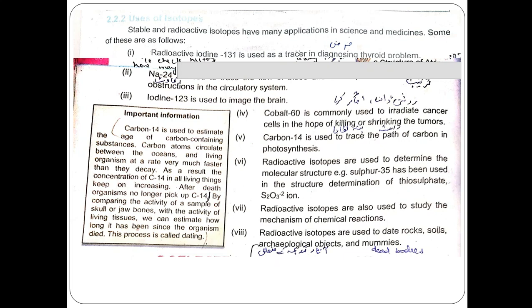Iodine-123 is used to image the brain — similar to how CT scans use iodine-123 for brain imaging. Cobalt-60 is commonly used to irradiate cancer cells in the hope of killing and shrinking tumors.